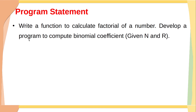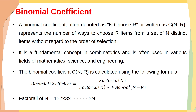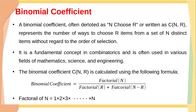Let's see the program statement again: write a function to calculate factorial of a number, and develop a program to compute binomial coefficient given n and r. A binomial coefficient, often referred to as n choose r, represents the number of ways to choose r items from a set of n distinct items without regard to the order of selection. It is a fundamental concept in combinatorics and is often used in various fields of mathematics, science, and engineering.